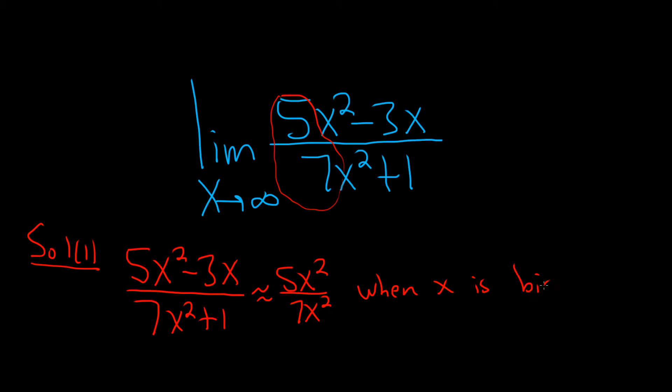And again, this is really just a little bit of what's called hand-waving, so we're not being rigorous here. These cancel, so you just get 5 sevenths. So the answer is going to be 5 sevenths.